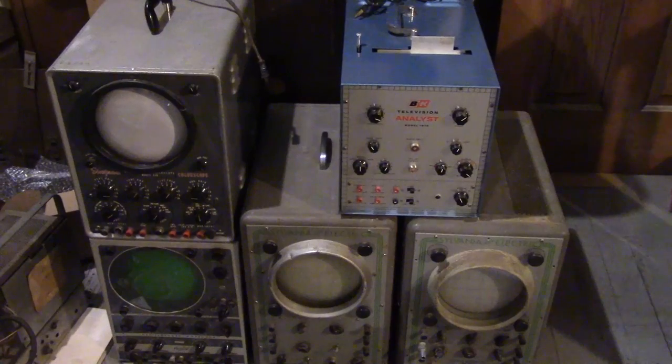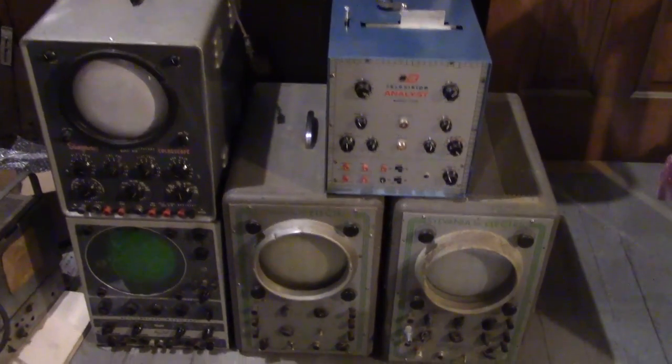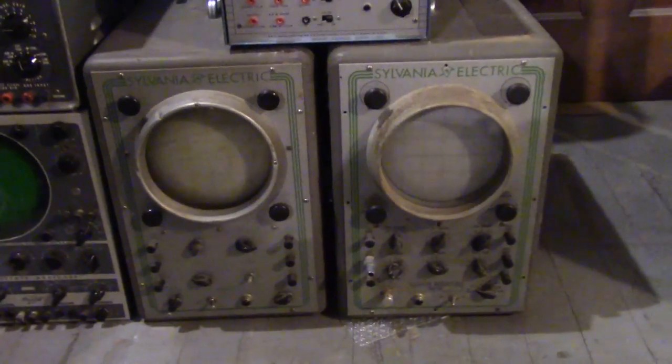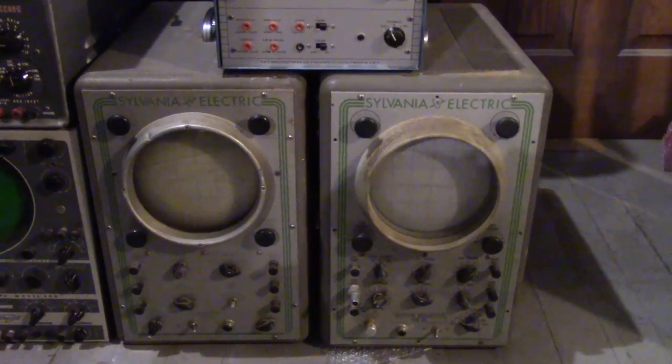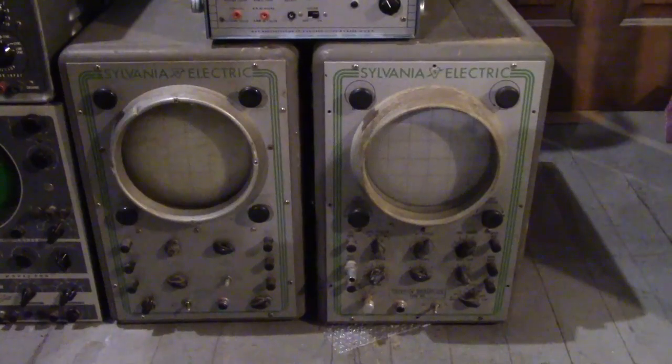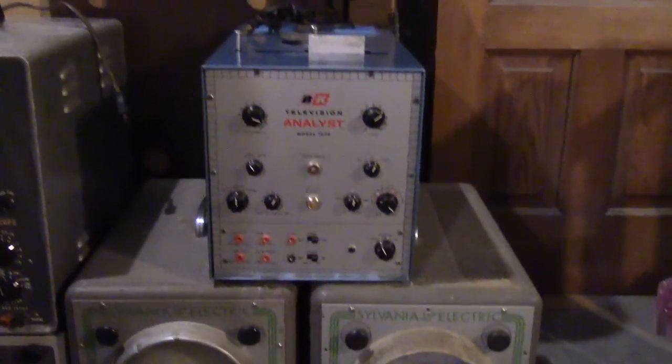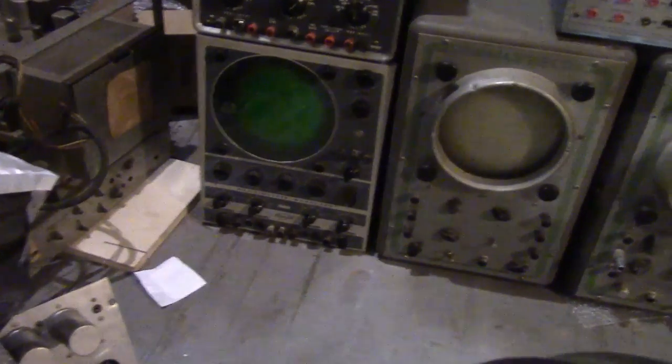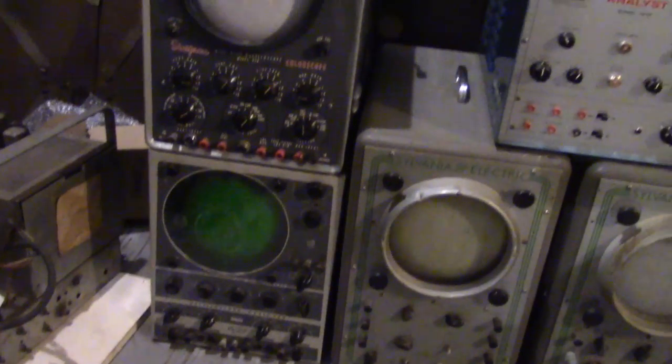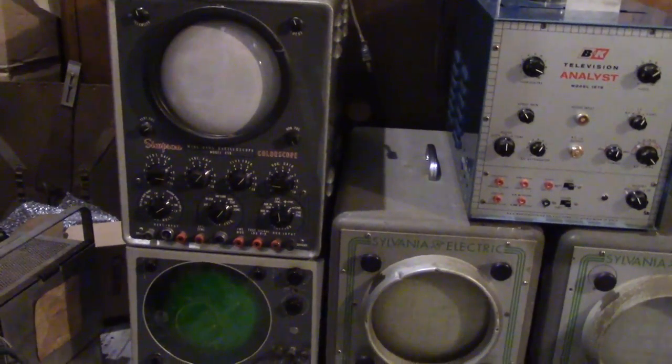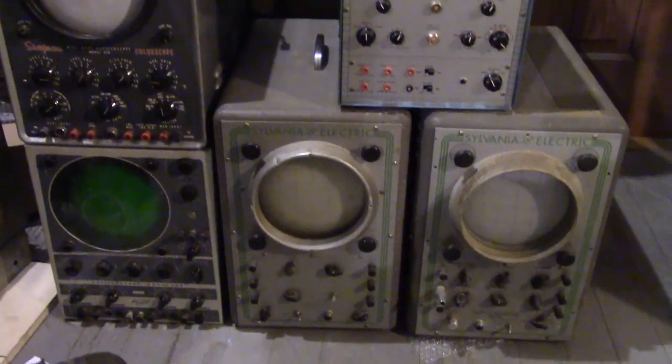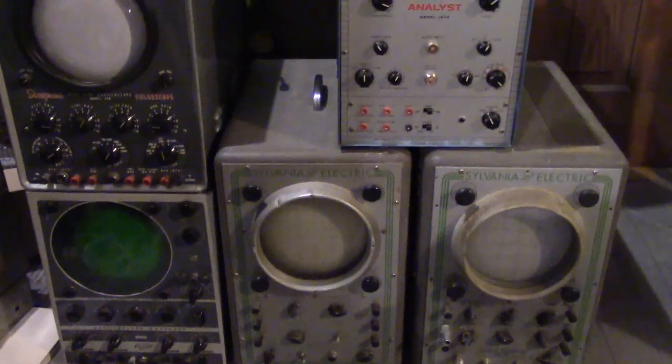Here they all are up inside on my back porch. The two Sylvanias side by side, you can really see how similar they are. For sure I want to restore those two if at all possible. Definitely the B&K. The other two, we'll see. They look to be a little bit cheaply made inside. So we'll be looking for an in-depth video one by one on each of these in the not too distant future.